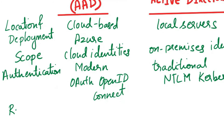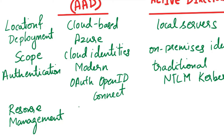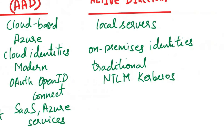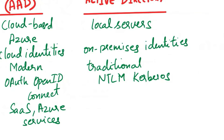The next aspect of comparison is resource management. Azure AD manages access to cloud-based resources like SaaS apps and Azure services. On-premises Active Directory manages access to on-premises resources like file servers and internal applications.